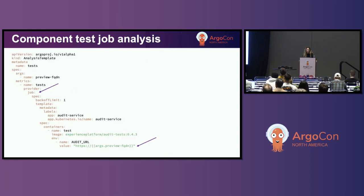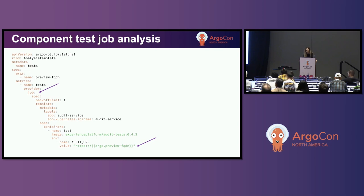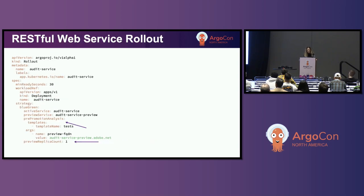This test will be referenced in an analysis template similar to what you see on the screen. The important thing to note is that the RESTful web server's URL needs to be added as a parameter, and it needs to point to the preview service that's targeting the preview pod — basically the green part of a blue-green deployment. This analysis is then referenced by the Rollout spec as a pre-promotion analysis, meaning the Rollout controller is instructed to run this test against the preview service before it is promoted and receives any live traffic. Therefore, if there is an issue that can be captured through testing, we'll have no impact.